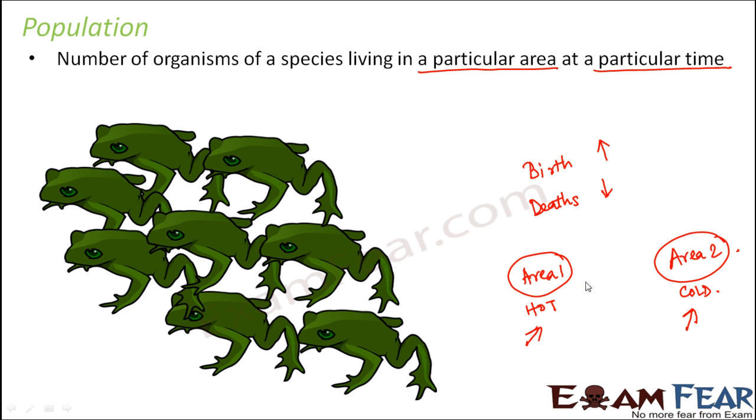Area 1 would be inhabited by frogs which are adapted to hot environment. Similarly, area 2 would be inhabited by frogs which are adapted to cold environment. As the areas change, the population might also change even if we are talking about the same species. The key point to remember is that whenever we talk about a population, it should be for a specific area at a specific time.